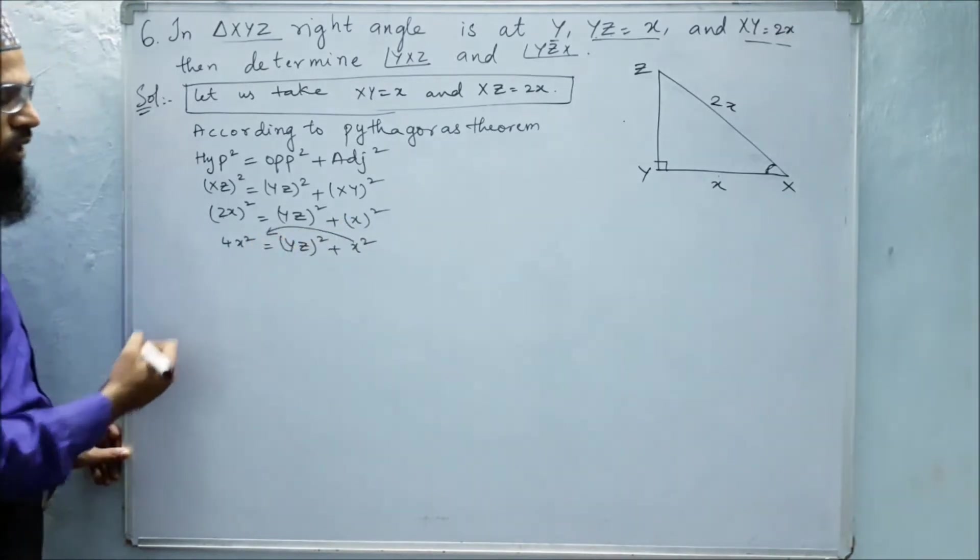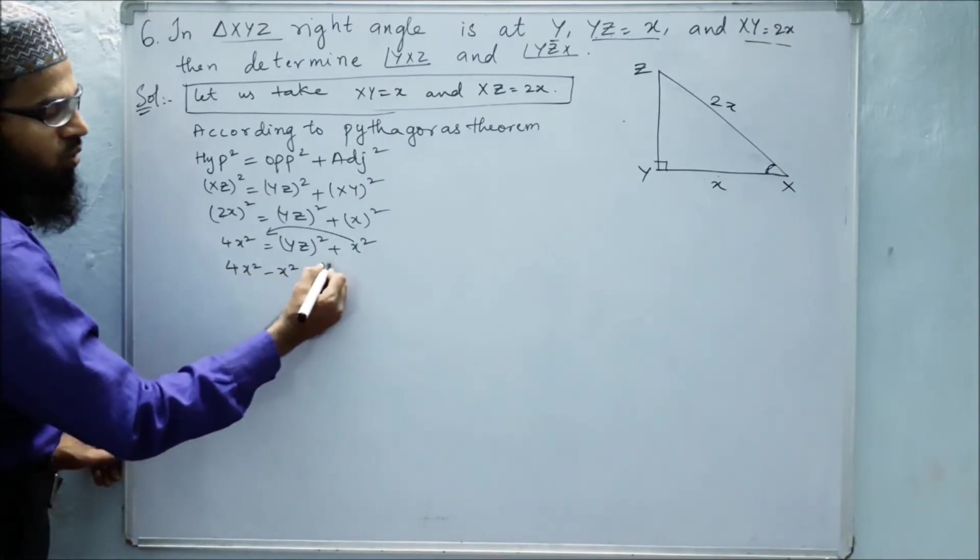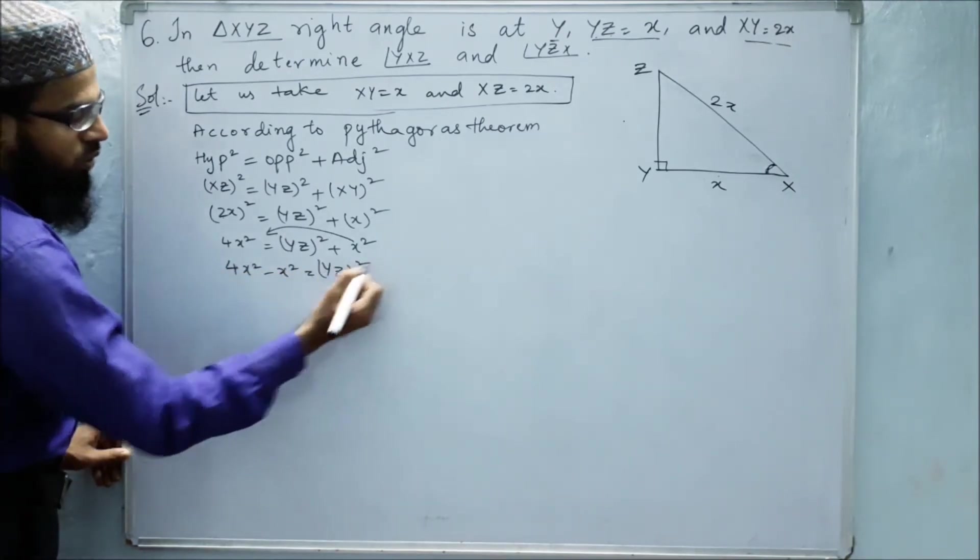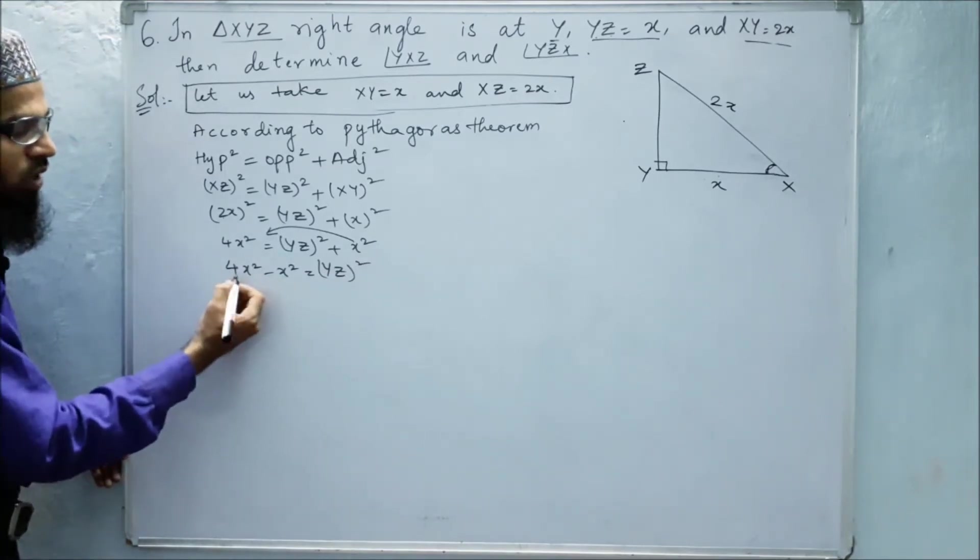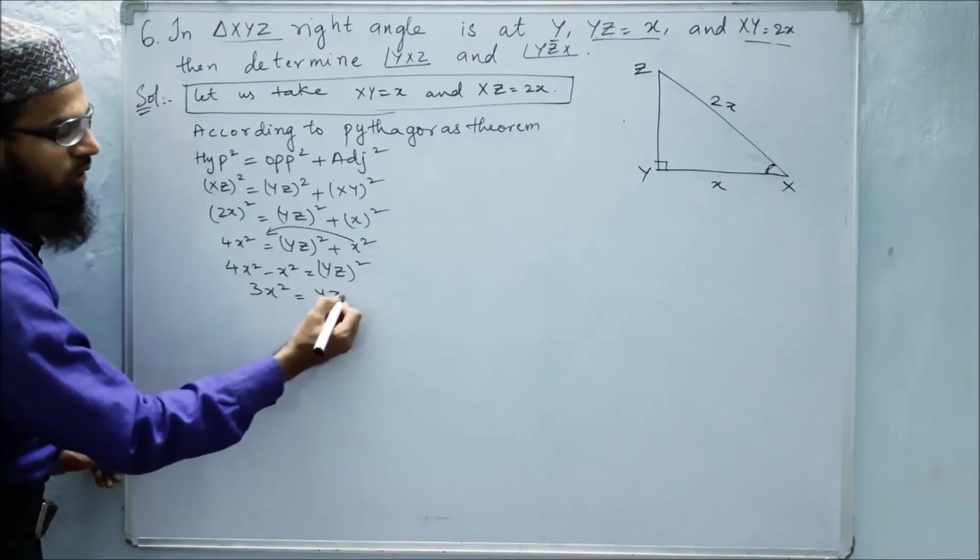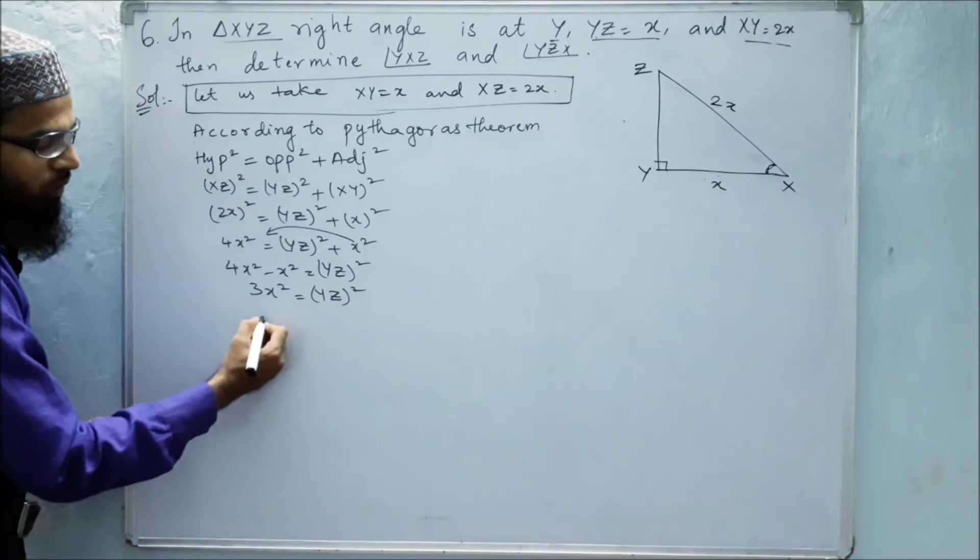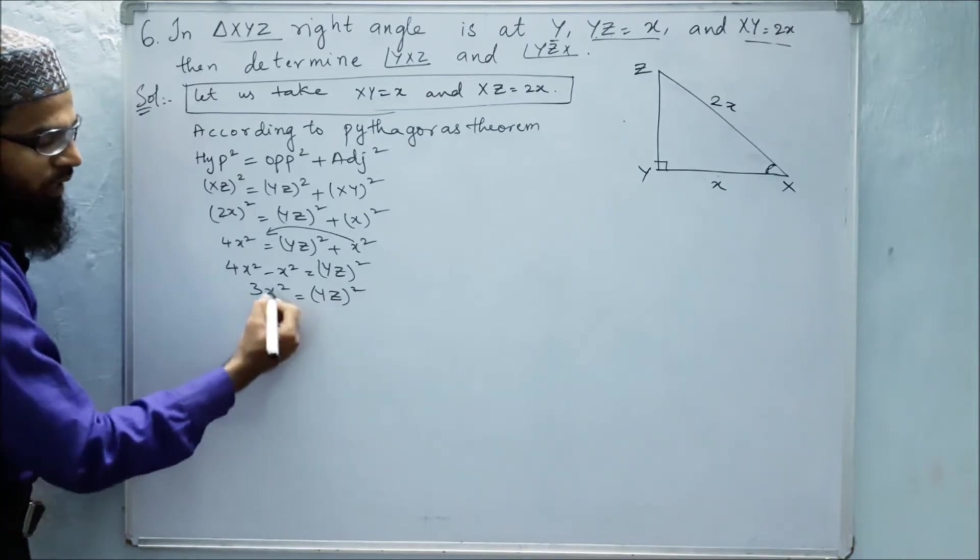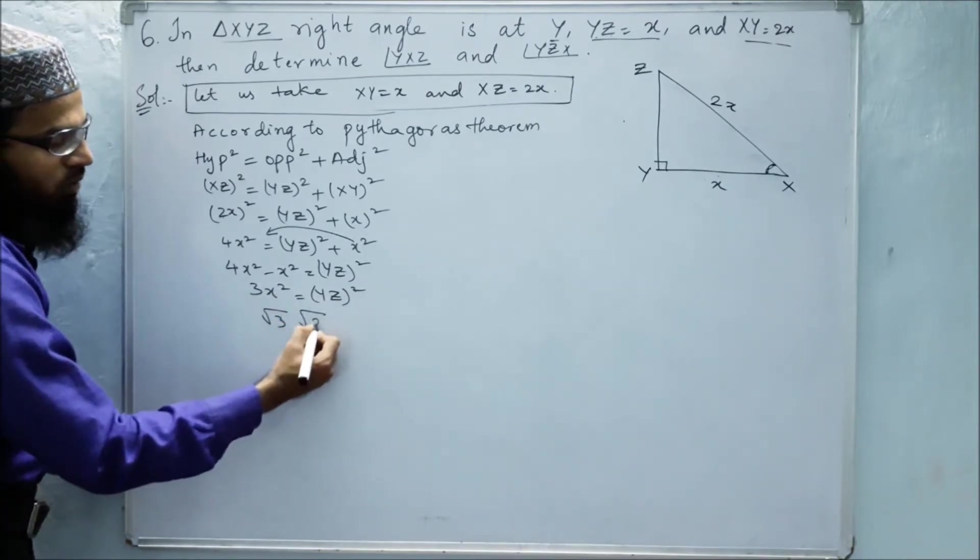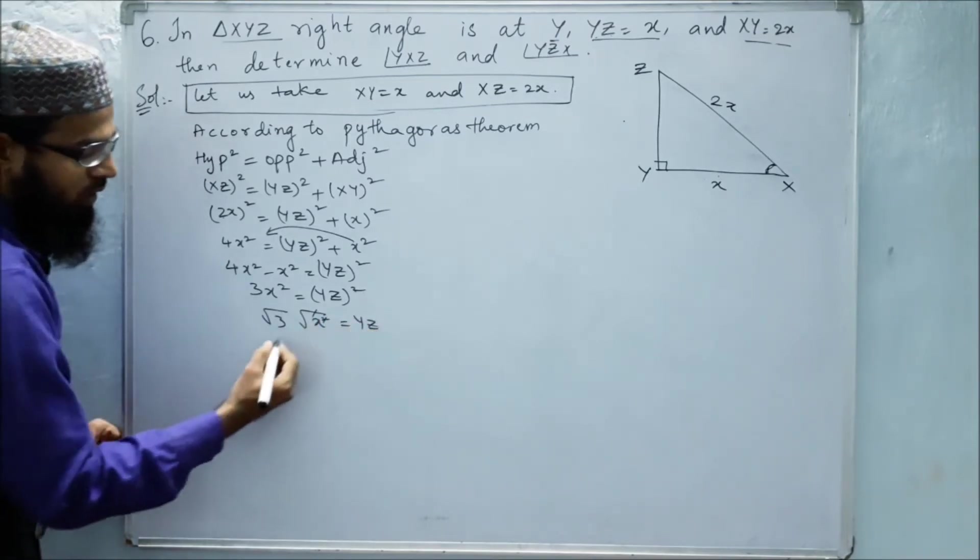Send this x squared to that side. It will become 4x squared minus x squared equals YZ whole squared. When we remove one x squared from 4x, we get 3x squared equals YZ whole squared. Now when this square goes to that side, it will become root. Root 3x squared root is, square root will get canceled, we get YZ. So therefore, YZ equals root 3x.